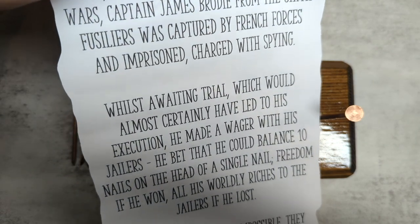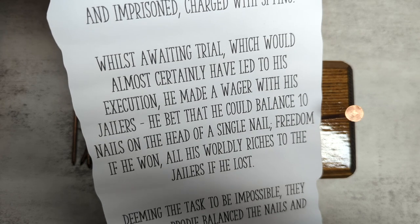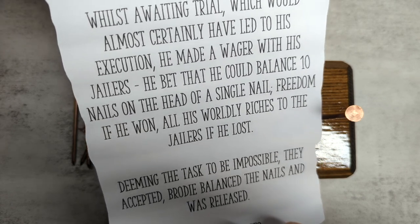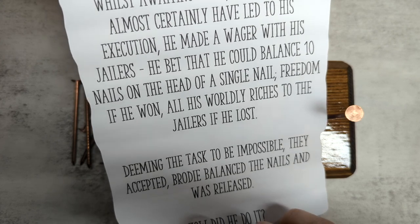Whilst awaiting trial, which would almost certainly have led to his execution, he made a wager with his jailers. He bet that he could balance 10 nails on the head of a single nail, freedom if he won, or all his worldly riches to the jailers if he lost.